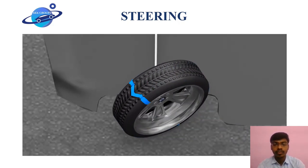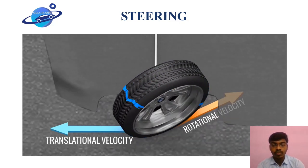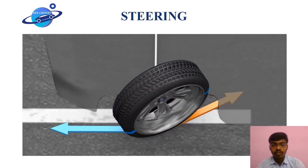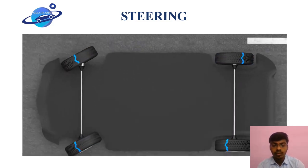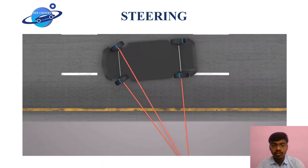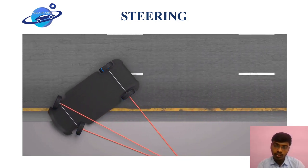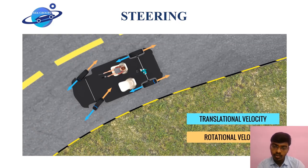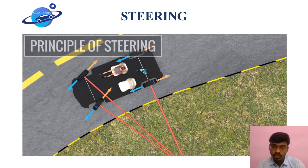At the contact point of the wheel, the rotational velocity is inclined but the translational velocity is straight. Because of this, the velocities do not cancel each other out, leading to skidding. The only way to achieve zero velocity condition is to make the translational velocity also inclined. This is possible only when the whole car turns with respect to a particular center point. For a perfect turn, the perpendicular lines from the front wheels must meet the rear wheel axis at a common point — this is the principle of steering.